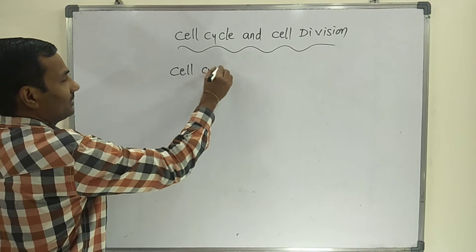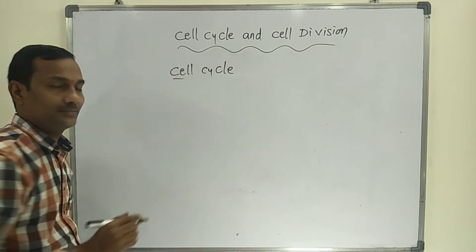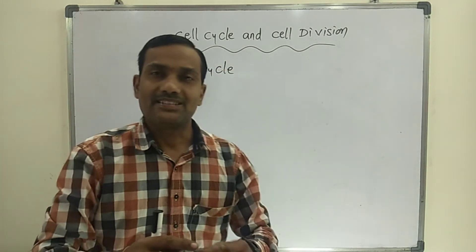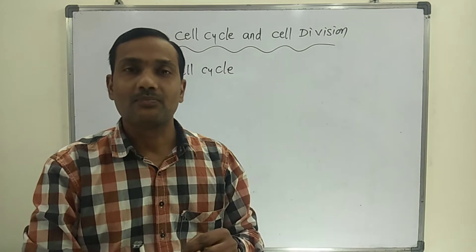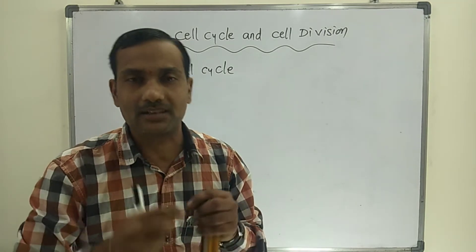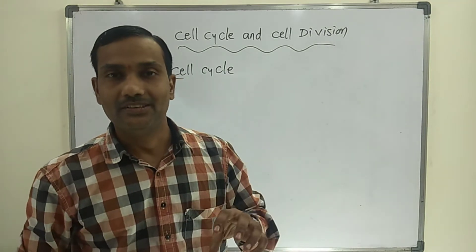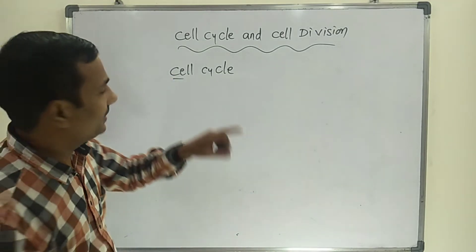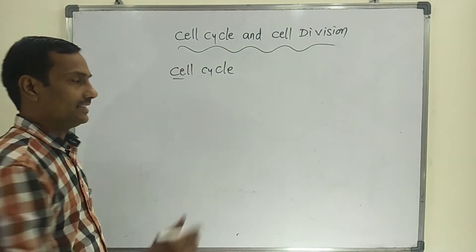During the cell cycle, some major events occur. The cyclic events — whatever occurs during cell division — all those events together are called the cell cycle.